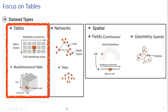For tables, you can see the attributes and the items. For example, you can take Excel as a spreadsheet as an example for this kind of table. But for the multi-dimensional table, you can see cubical ones. For network graphs, we have links and nodes — links means the branches and nodes are the points. We also have trees, such as decision trees.